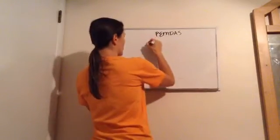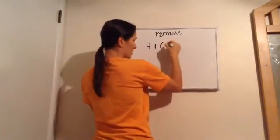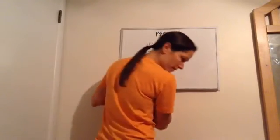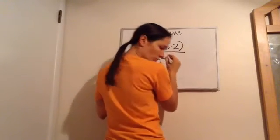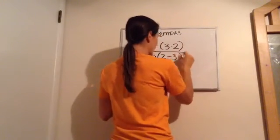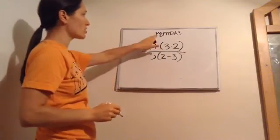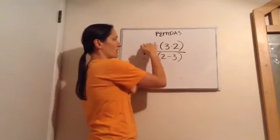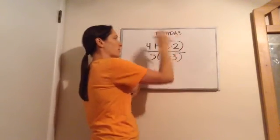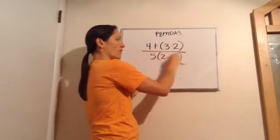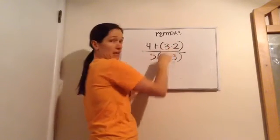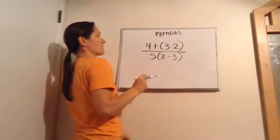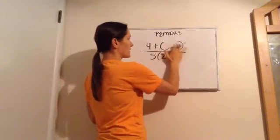Let's actually do one of these problems: (4 + 3 × 2) all over (5 × 2 − 3). Following PEMDAS, you always do parentheses first. When you have something on top and something on the bottom, answer everything on the top, answer everything on the bottom, and then divide — that's how you work that problem.